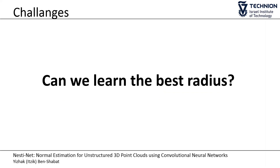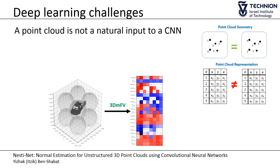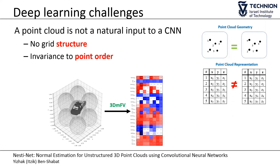Can we learn the best radius? Recent advances in deep learning for point clouds, like the 3D MFV representation, were able to solve the major challenges associated with feeding point clouds into a convolutional neural network — mainly the lack of a grid structure, point order, and number of points. This enables the development of data-driven algorithms for normal estimation.